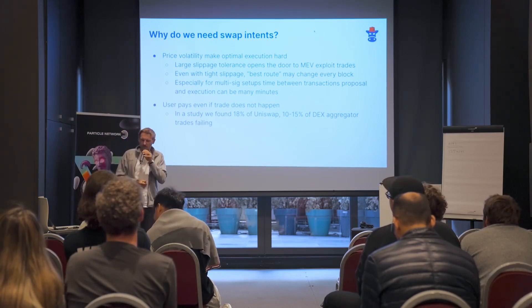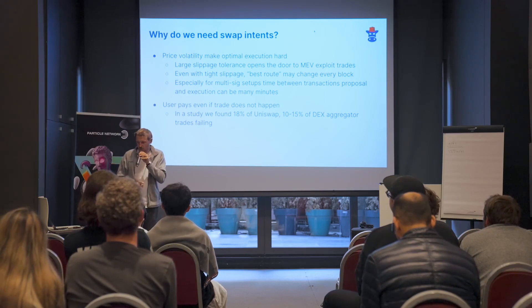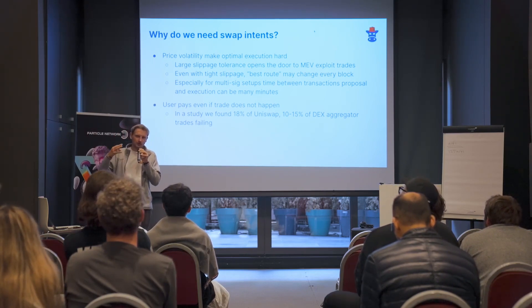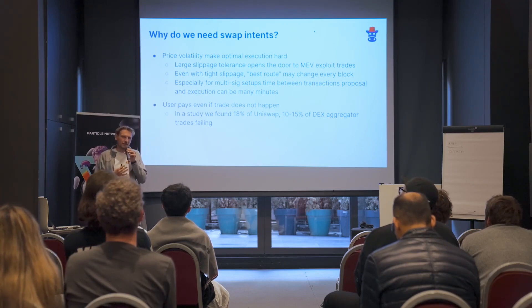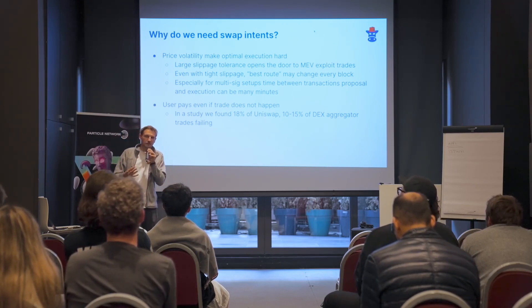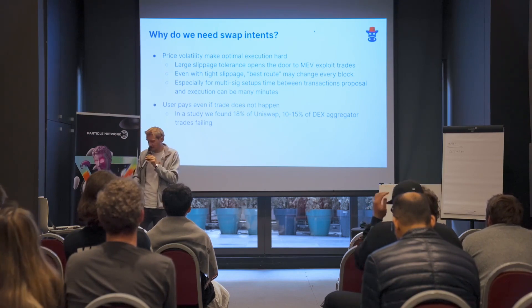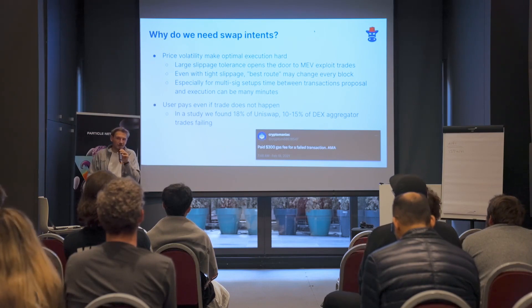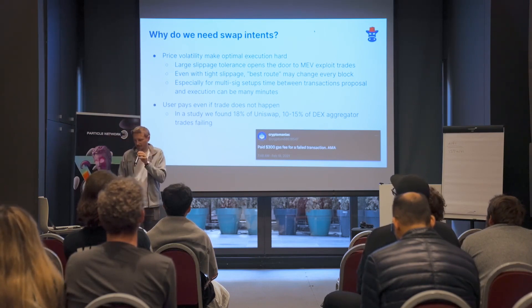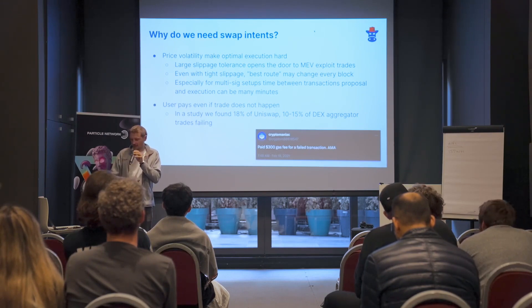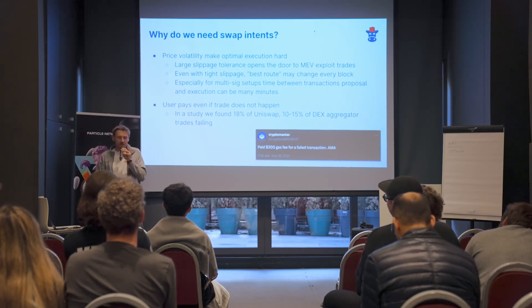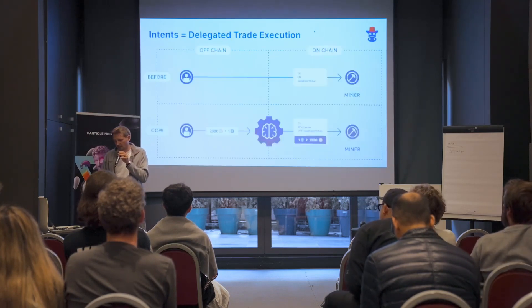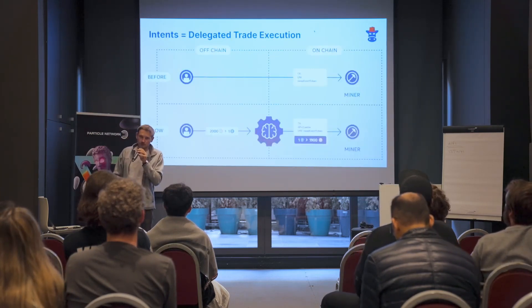The second drawback we saw at the time is still true today, especially with high gas prices again — retail users have to do all this complex stuff, and if they mess up, they have a pretty high cost. Because if the transaction fails, they pay gas transaction costs that can, in bull market times, be $100 per transaction for achieving nothing. Back in those days, a study showed that 15% of DEX aggregator trades, and more than 15% of Uniswap trades, were failing at the time, causing a lot of harm and execution costs to users.